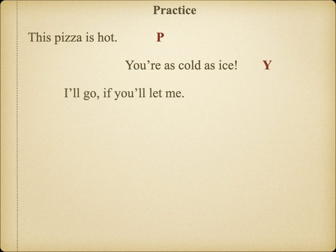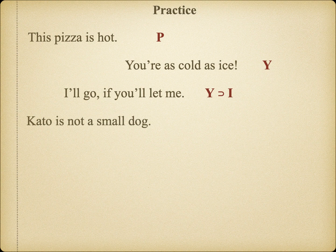But what about this one: 'I'll go if you let me.' It's clearly a conditional statement — an if-then statement — but notice that the consequent 'I'll go' comes before the antecedent 'if you'll let me.' That's okay. All we have to do in the symbolized proposition is reverse the order, giving us the logical meaning of the statement: if Y then I. Here's another interesting one. The logical meaning is really 'it's not the case that Cato is a small dog,' so we simply place a tilde in front of K.